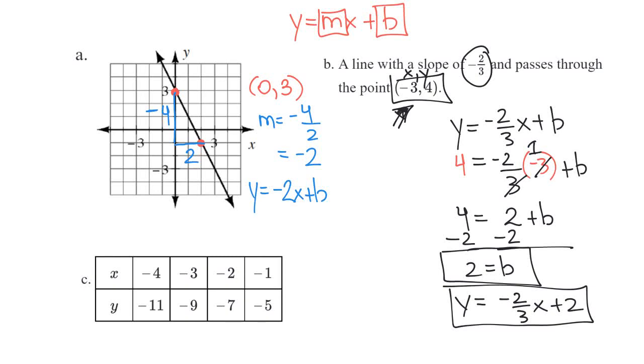I'm given a table. So basically I'm given points and I need to find the slope. Well, I noticed the change in y, right, because slope is change in y over change in x.